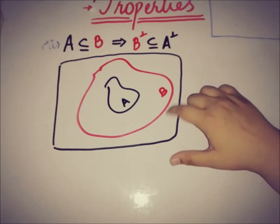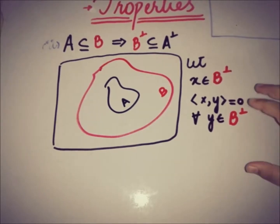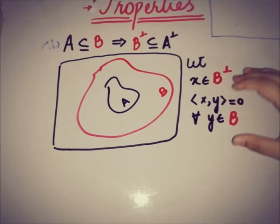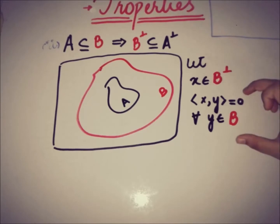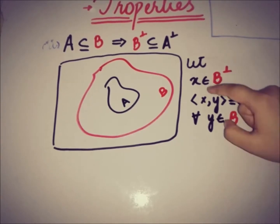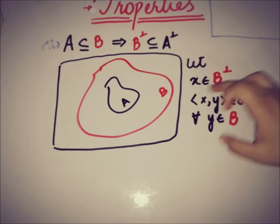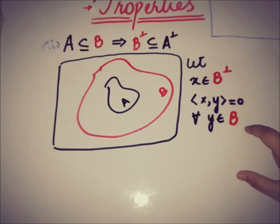If we take an element X from B annihilator, we can apply the definition: the inner product of X and Y equals 0 where Y is taken from B. This holds not only for one element of B but for all elements of B by definition.